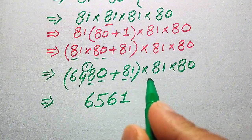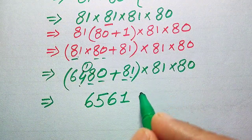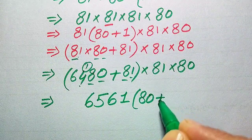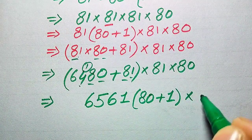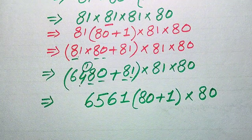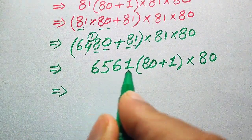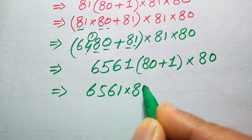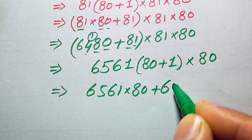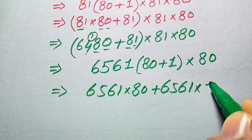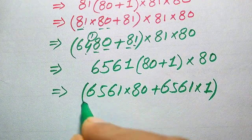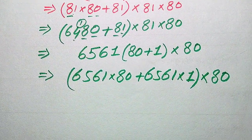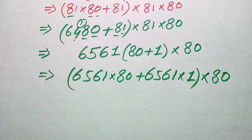Now we need to multiply 6561 by 81. We again break 81 as 80 plus 1. So we compute 6561 multiplied by 80, plus 6561 multiplied by 1. This result is then multiplied by 80.